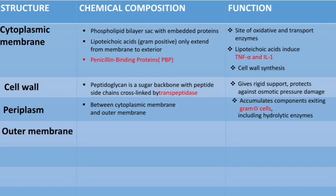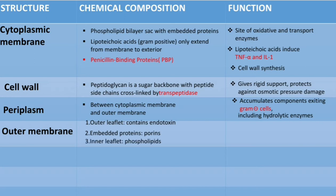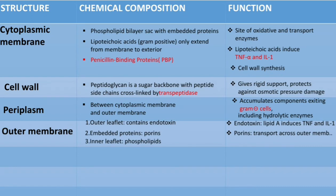The next structure is the outer membrane. It has three layers: the outer leaflets contain endotoxin; there are also embedded proteins, which are actually porins; and the inner leaflets contain phospholipids. The endotoxin is lipid A, which induces tumor necrosis factor alpha and interleukin-1. The porins are for transport across the membrane. Outer membrane proteins (OMPs) are antigenic, meaning they have the ability to induce an immune reaction.